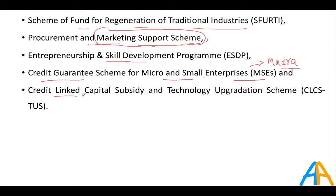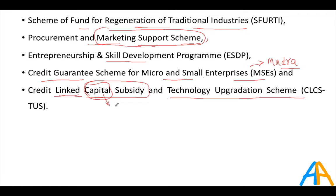The Credit Linked Capital Subsidy and Technology Upgradation Scheme helps MSMEs acquire machinery. When purchasing capital equipment, approximately 15% upfront discount is given by the government — meaning the subsidy is given at the time of purchase itself, not after. All these schemes are mainly targeting MSMEs.